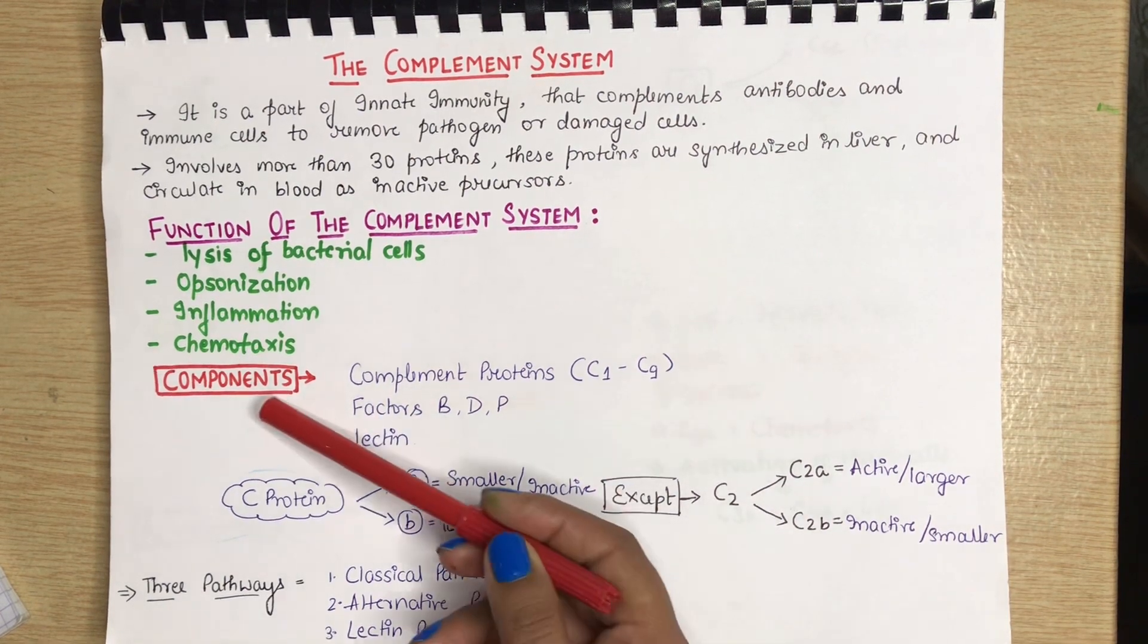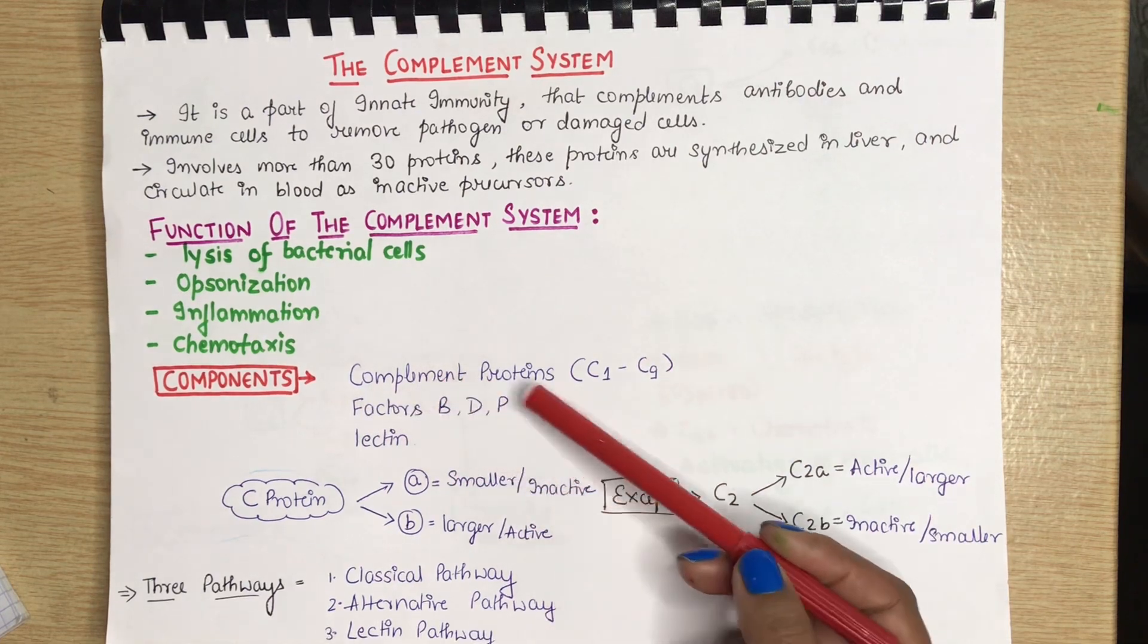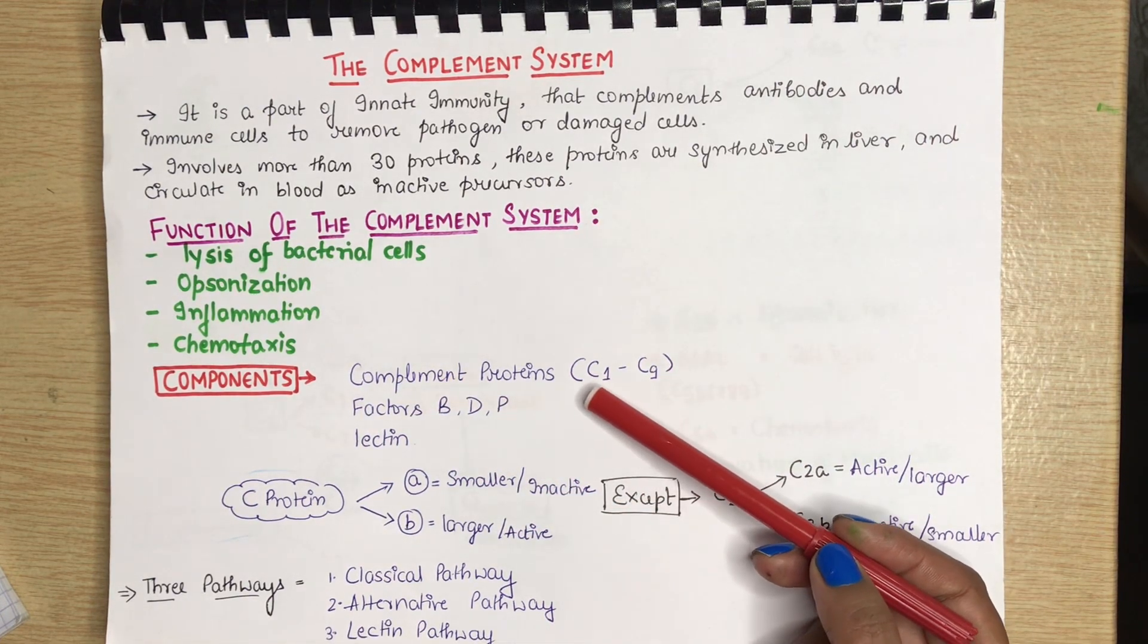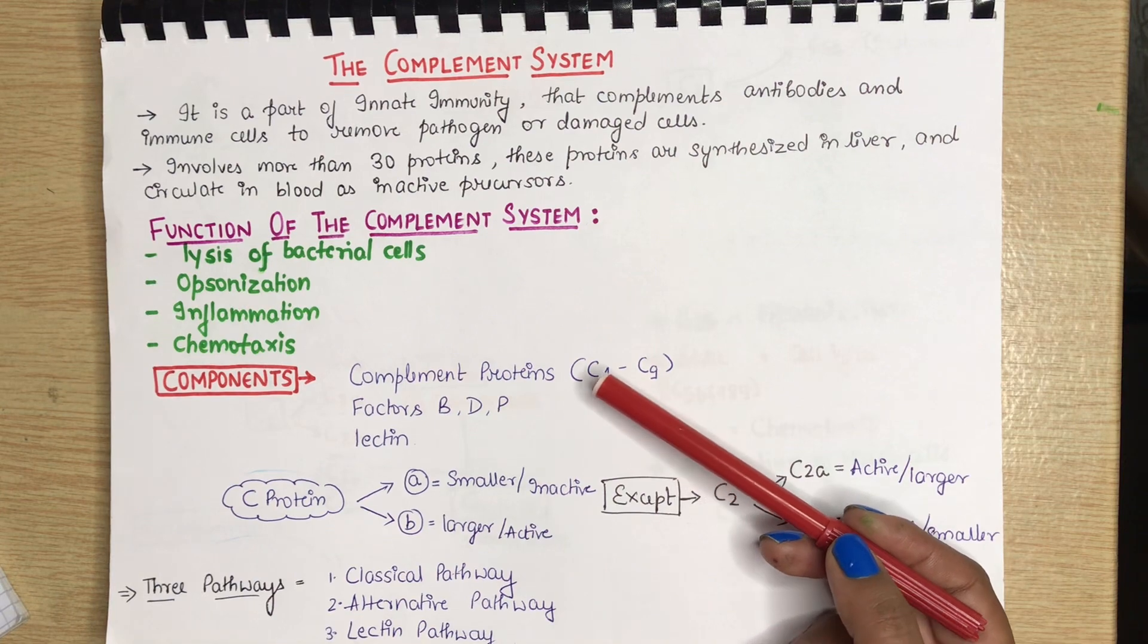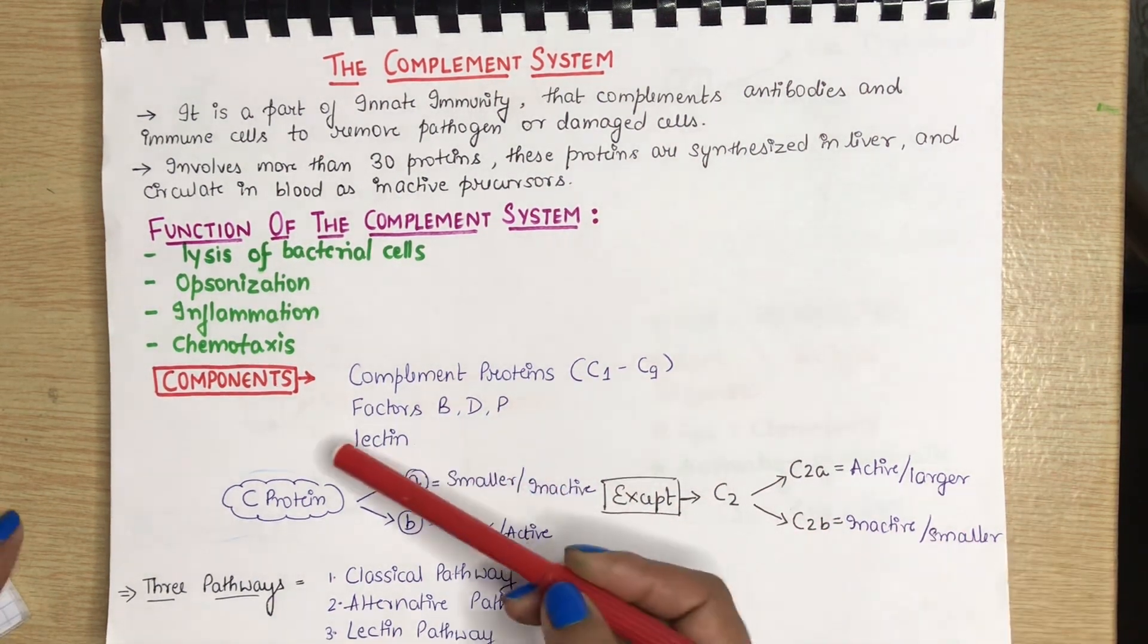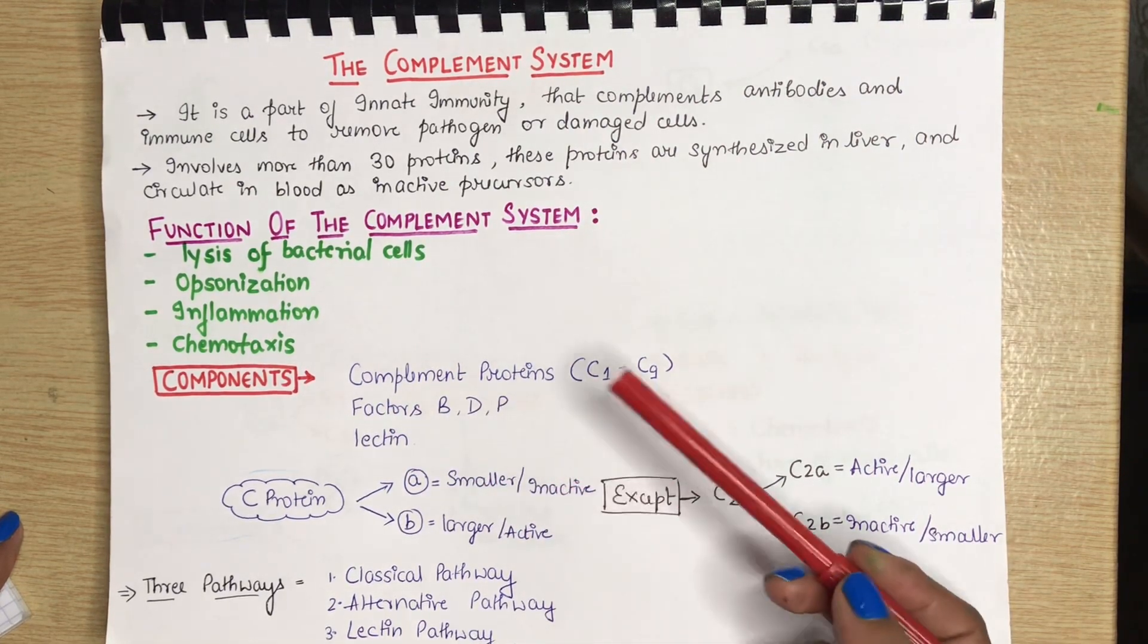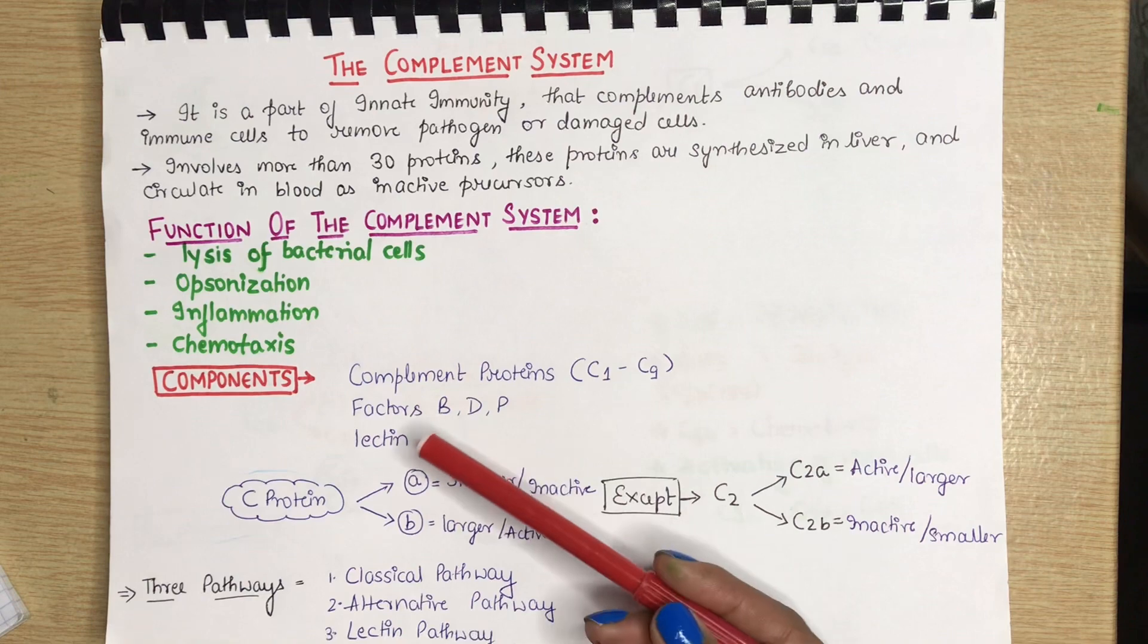What are the components involved in the complement system? These are complement proteins C1, C2, C3, C4, C5, C6, C7, C8 and C9. The factors which are involved are factor B, factor D and factor P. Also, we have lectin.